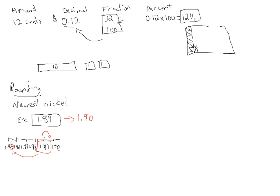What would happen if it was a dollar eighty-eight instead? Is a dollar eighty-eight closer to a dollar ninety or closer to a dollar eighty-five? We'd have to go one, two cents to go up, or one, two, three cents to go down. So a dollar eighty-eight is only two cents away from a dollar ninety — it rounds to a dollar ninety. What about a dollar eighty-seven? To go up to a dollar ninety it's three cents, and it's only two cents down to a dollar eighty-five. So a dollar eighty-seven would round to a dollar eighty-five.